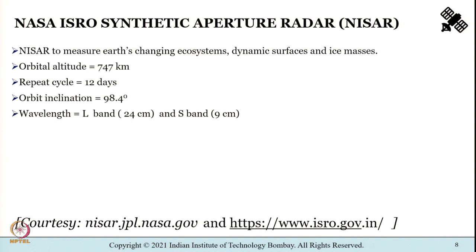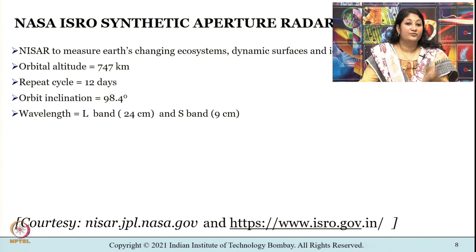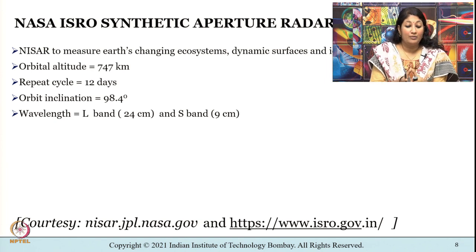Let me introduce one more mission proposed for launch in 2022: NISAR, which stands for NASA ISRO Synthetic Aperture Radar. It shall be the first radar of its kind to use two frequencies — the L-band and the S-band microwave frequencies — to measure changes in the earth's surface. NISAR shall have an orbital altitude of nearly 747 kilometers with a repeat cycle of 12 days, capturing images in both L-band and S-band.